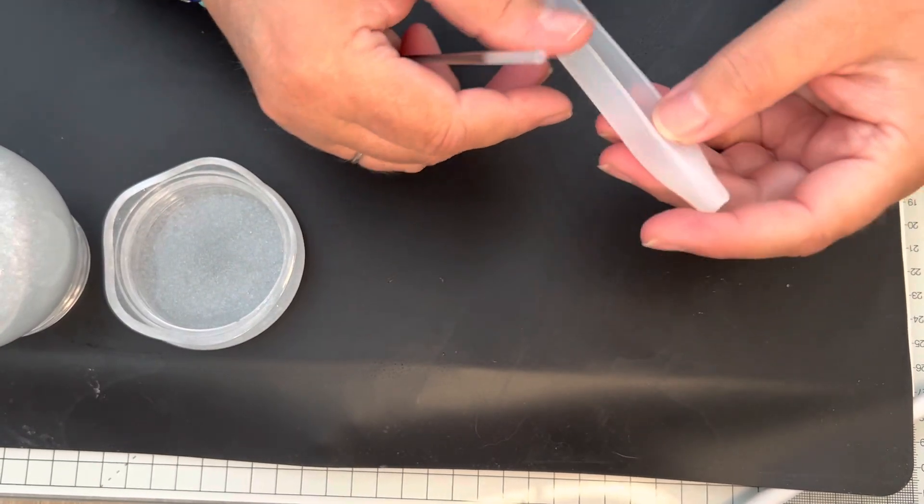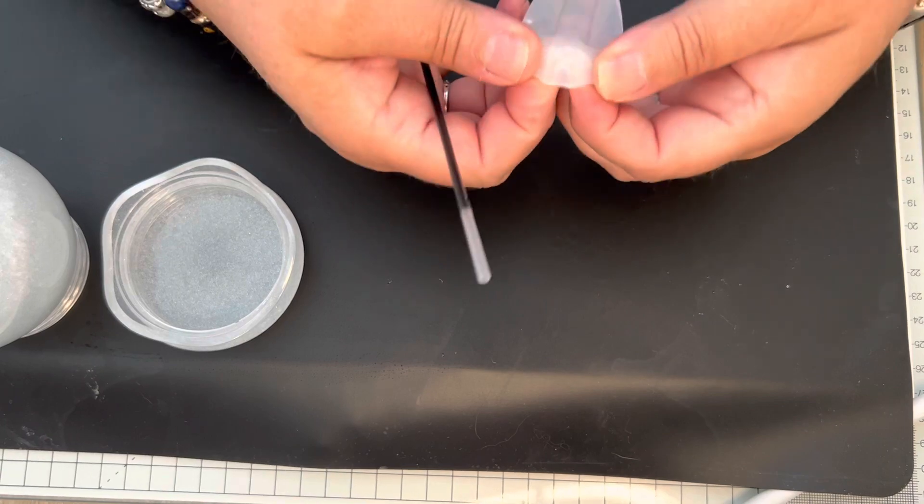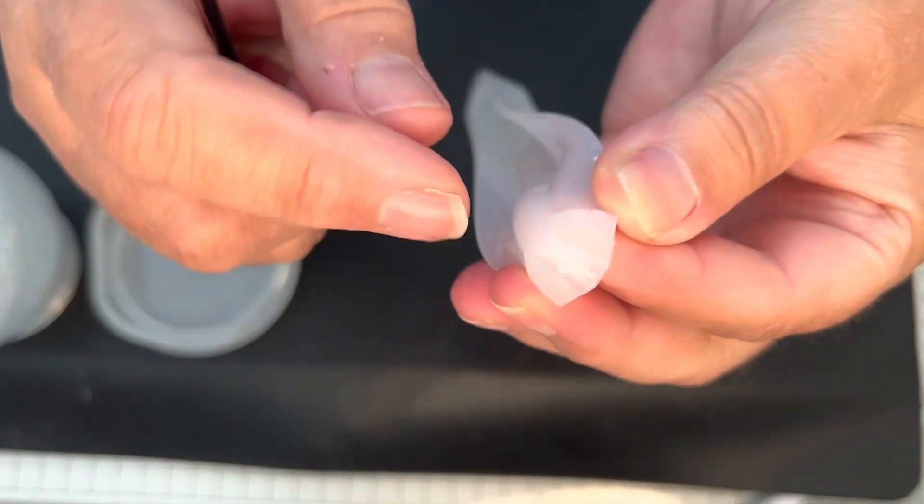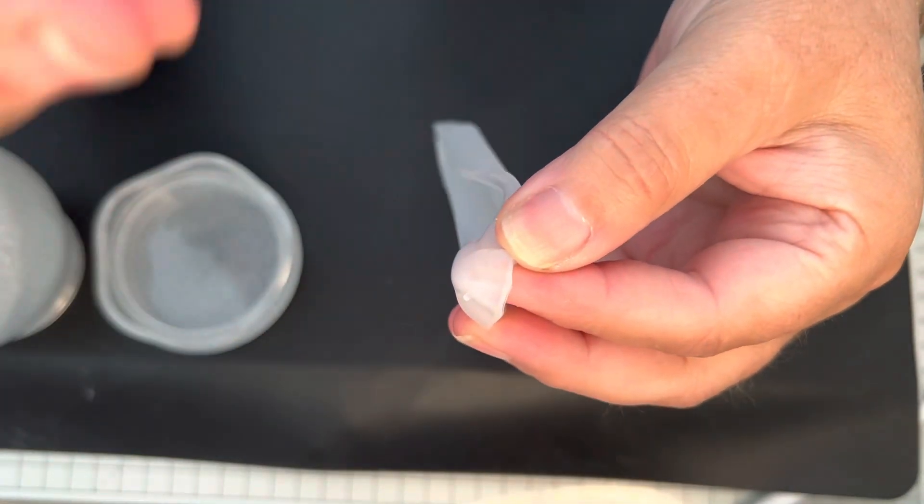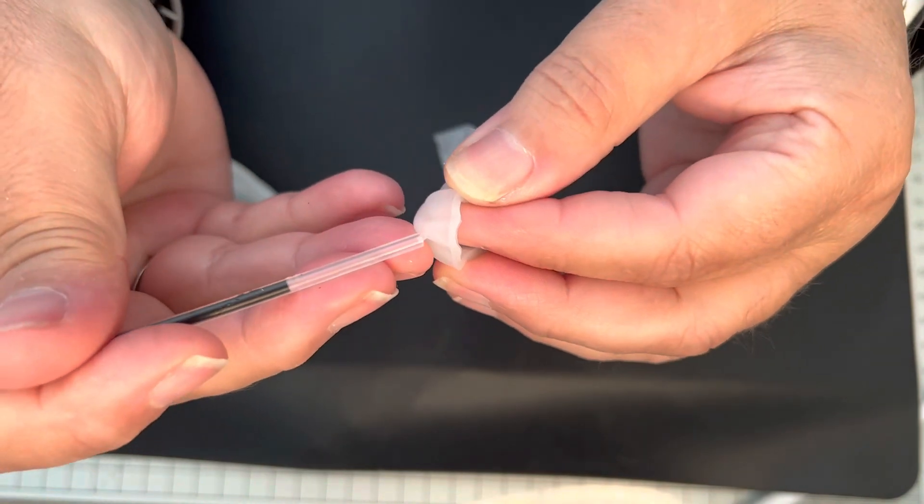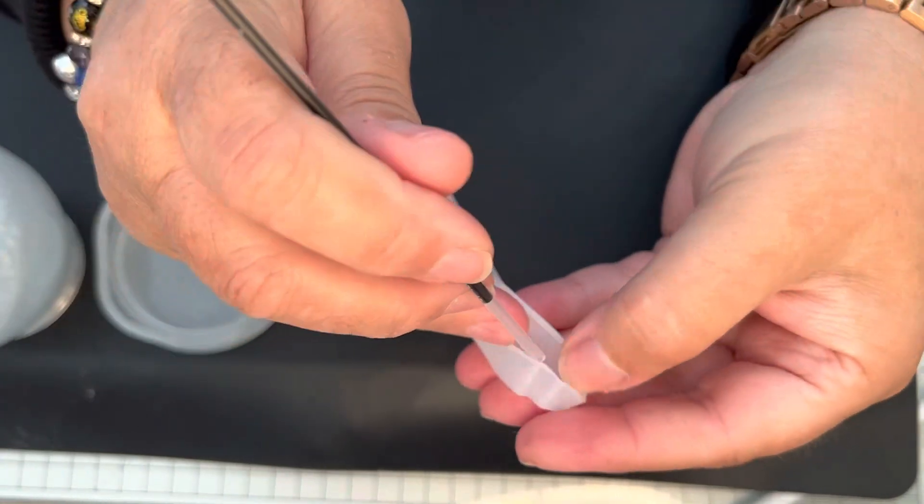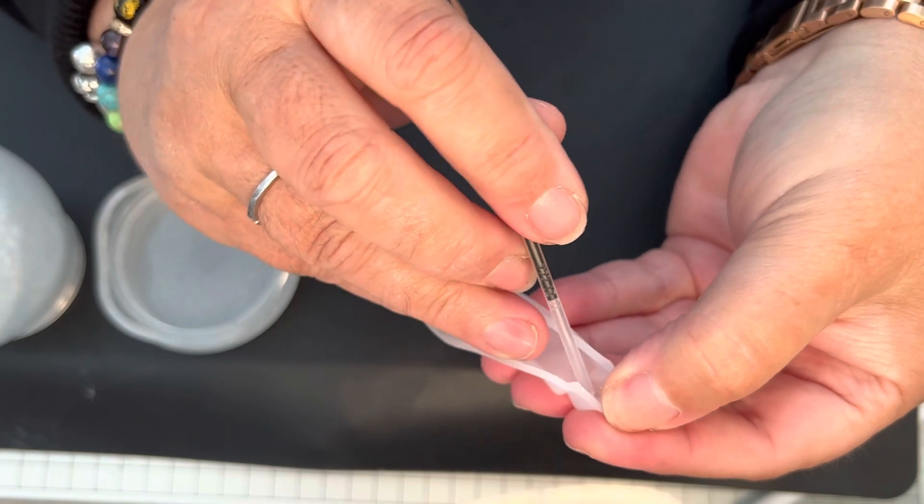So what you do, at this end you'll see that there's a little nib. So you put that nib inside the ink cartridge part.